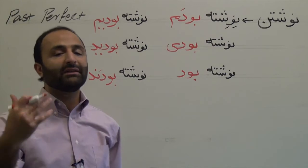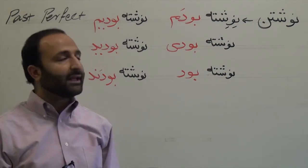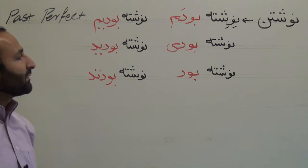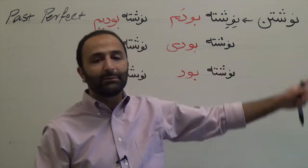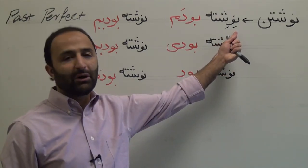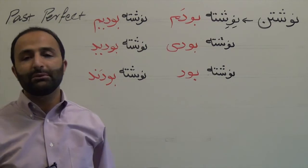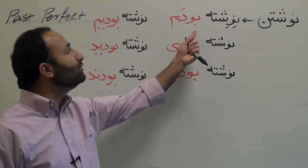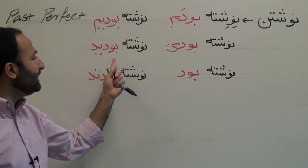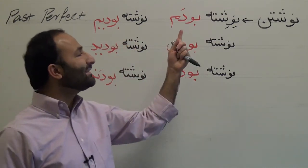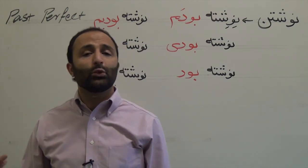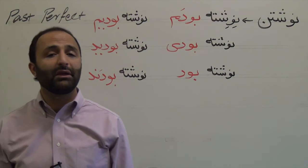Another example: گفتن means 'to say.' First, the past participle is گفته, then conjugated with the verb 'to be' (past tense): گفته بودم، گفته بودی، گفته بود، گفته بودیم، گفته بودید، گفته بودن — I had said, you had said, she or he had said, we had said, you had said, and they had said.